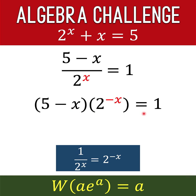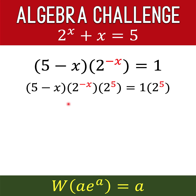Our goal is to rewrite the left side of the equation into the form a times e raised to a. We now have the factor 5 minus x, but the exponent is negative x only and the base is 2. We want the base e, and we want the exponent and this factor to be the same. To introduce 5 into the exponent, we recall that 2 raised to negative x times 2 raised to 5 gives 2 raised to negative x plus 5. So we multiply both sides of the equation by 2 raised to the 5th, giving the exponent negative x plus 5, which by commutativity is 5 minus x.